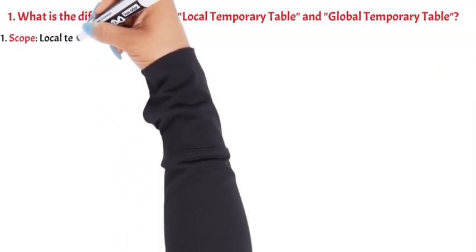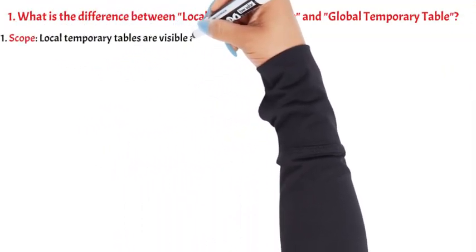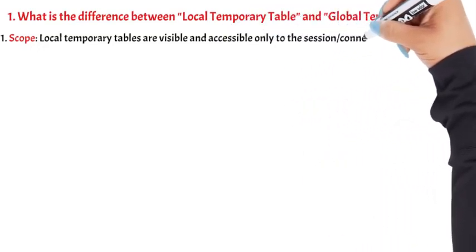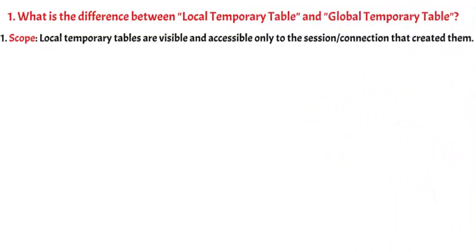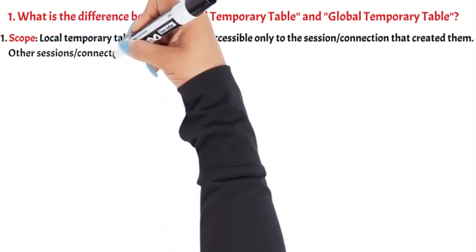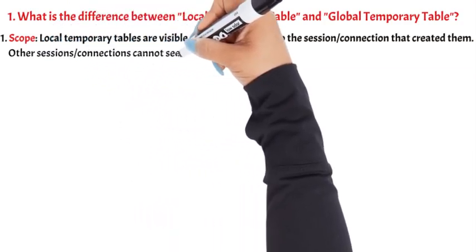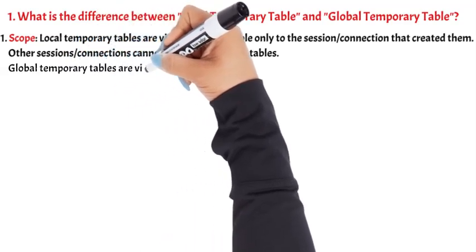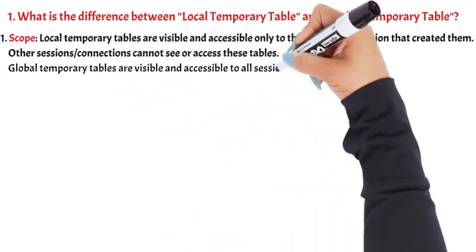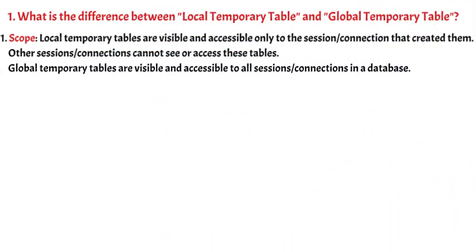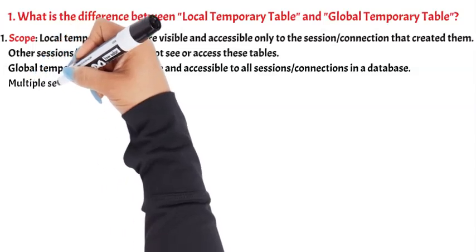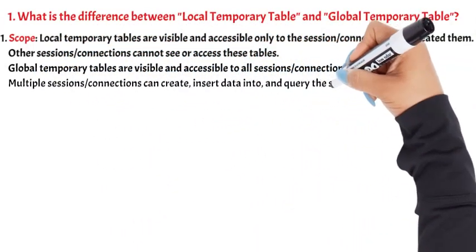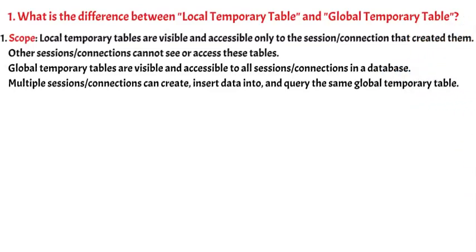1. Scope. Local temporary tables are visible and accessible only to the session/connection that created them. Other sessions/connections cannot see or access these tables. Global temporary tables are visible and accessible to all sessions/connections in a database. Multiple sessions/connections can create, insert data into, and query the same global temporary table.